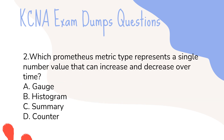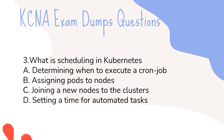Question 2: Which Prometheus metric type represents a single number value that can increase and decrease over time? A. Gauge. B. Histogram. C. Summary. D. Counter.